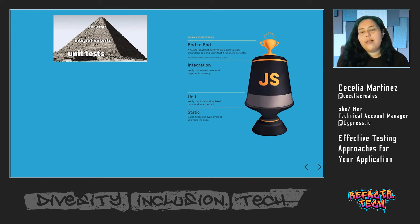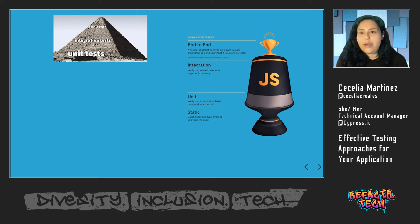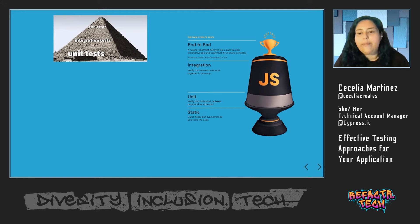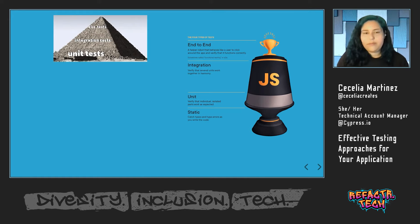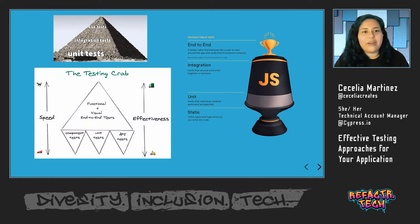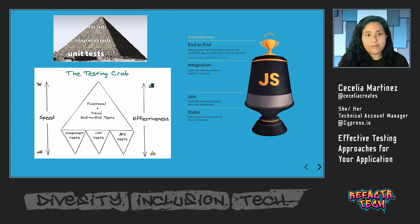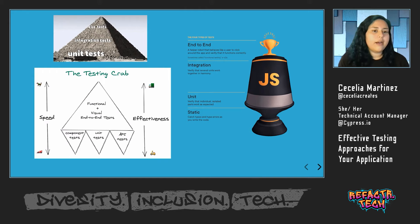There's also the testing trophy, developed by Kent C. Dodds, who has a lot of great educational content around testing. He designed a testing trophy where the bulk of tests are your integration and unit tests that validate that the different units are working together, with a foundation of static testing — which actually happens in your IDE by catching type errors while you write the code — and then end-to-end tests on top that verify functionality. There's also the testing crab, developed by Gleb Bamatov from Cypress, which gauges testing types based on speed and effectiveness. His framework is essentially functional and visual end-to-end tests making up the primary of your test suite, built on a foundation of component tests, unit tests, and API tests.